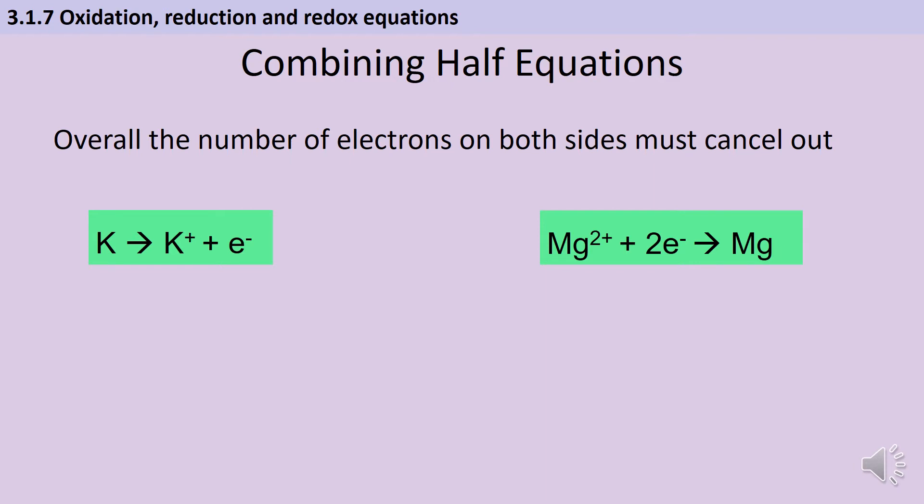So if we want to combine these two equations firstly we have to make sure that the electrons balance. At the moment I have one electron in my potassium equation and two in my magnesium equation. So the first thing that I'm going to do is to make my potassium equation balance with my magnesium equation by multiplying everything by two.